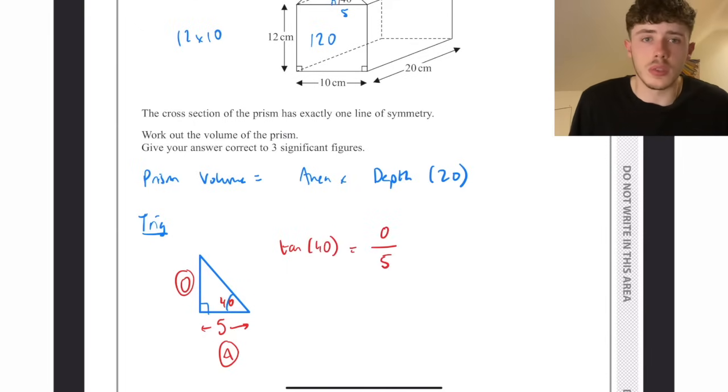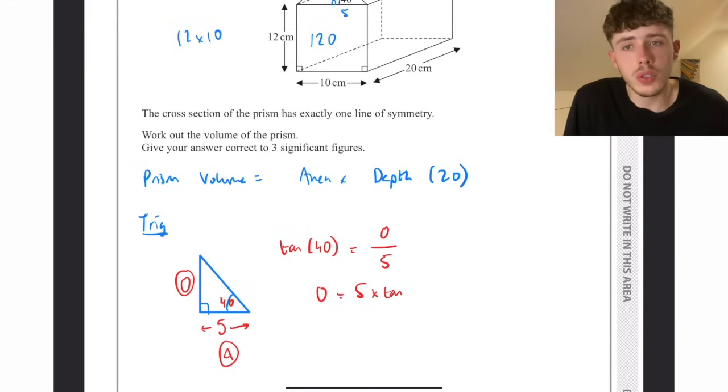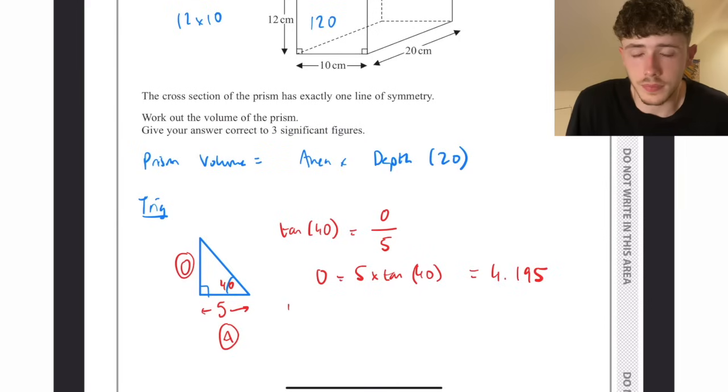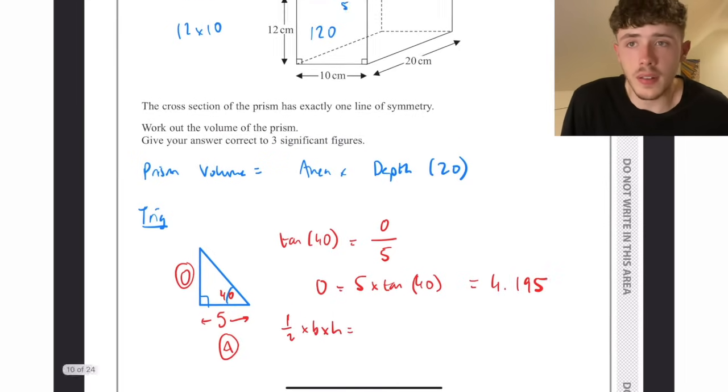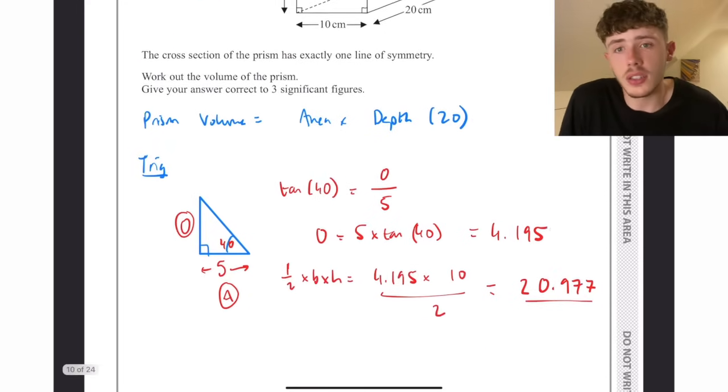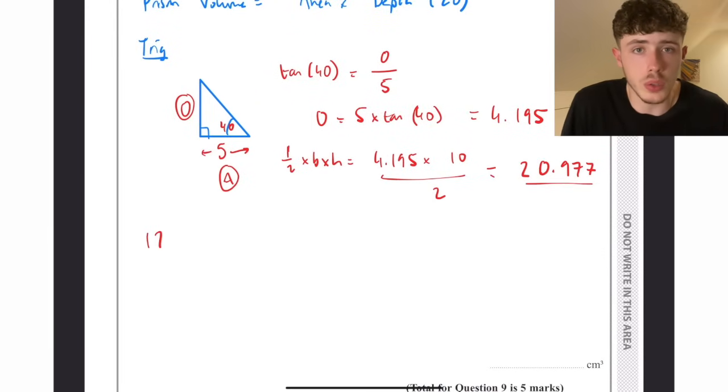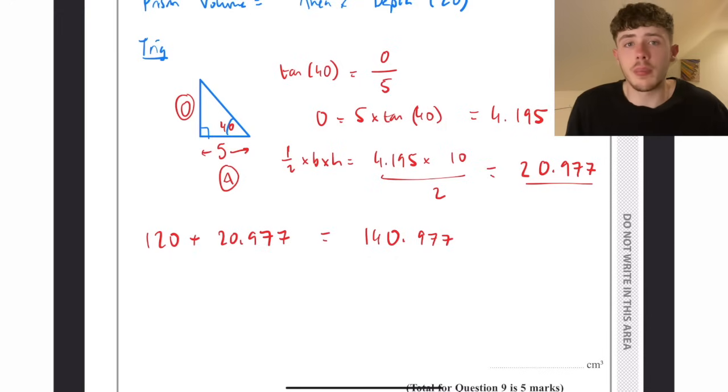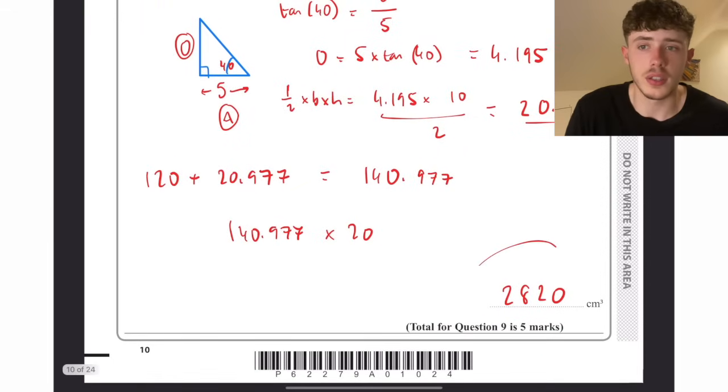We write it out: tan of 40 equals the opposite over 5, which is the adjacent. Multiply the 5 up, put it into our calculator, and we get the height is 4.195. We do half times base times height to get our area, which comes to 20.977. We add that to the original rectangle which was 120, and that gets us 140.977. Then we times that by the depth, and that is our final answer.